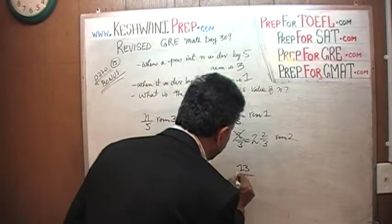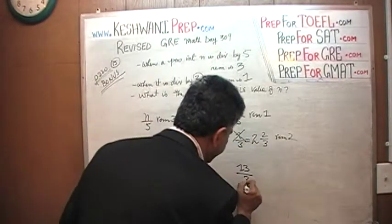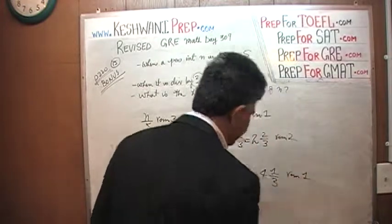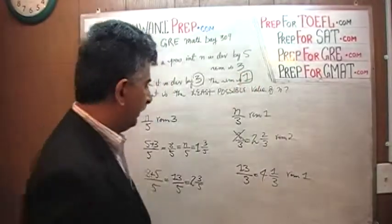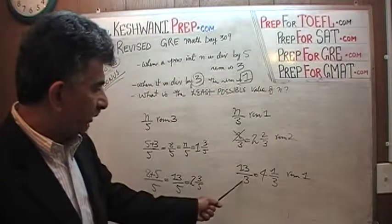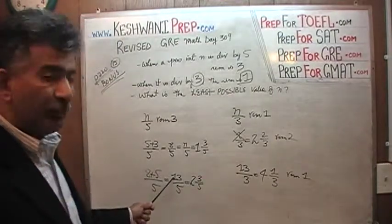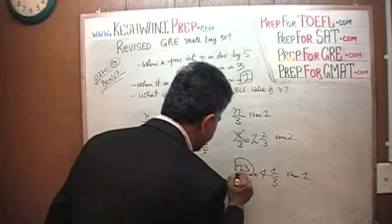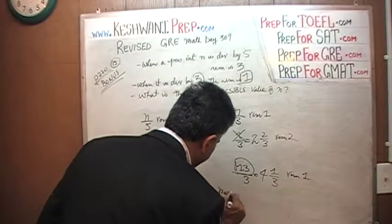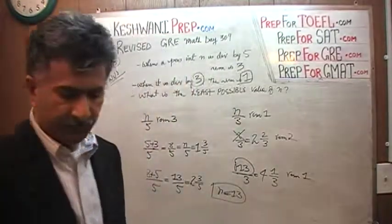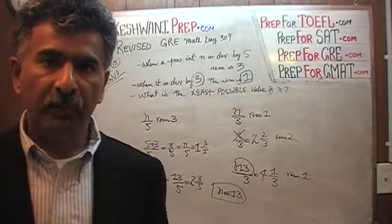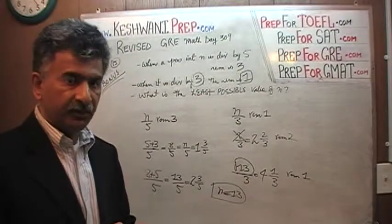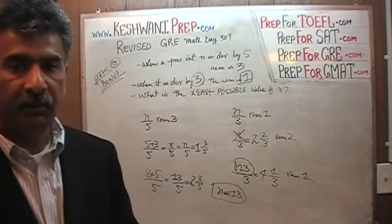We found a number which when divided by 3 yields a remainder of 1, and which when divided by 5 yields a remainder of 3. 13 is the answer — the smallest number that does the job. As you keep going, you will find more numbers that qualify and meet these two conditions; they will get bigger and bigger. There are infinite possibilities, but we just want the smallest one, and the smallest one is 13.